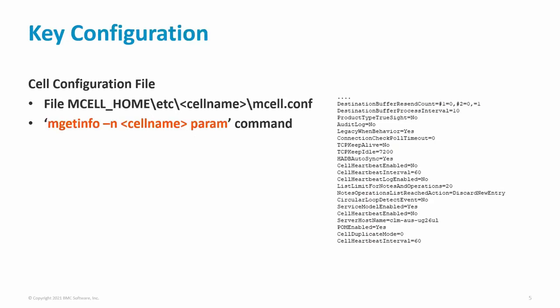The cell configuration file is called mcell.conf and is in the cell-specific ETC directory. Any cell configuration file can be in the cell-specific directory below mcell_home/ETC. If a configuration file exists in the cell-specific directory, it takes precedence over the file in the mcell_home/ETC directory and is used instead. This allows for different configurations between cells on the same system.